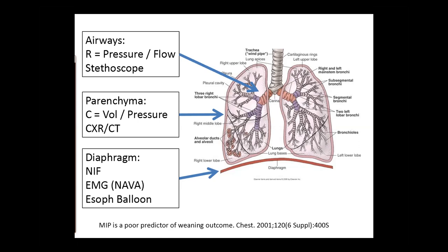However, subsequent studies — including a meta-analysis of 30 studies — found that the MIP or NIF is a poor predictor of weaning outcomes. The main reason is that the predictive capacity of NIF only assesses respiratory muscle strength and not the workload on the patient.